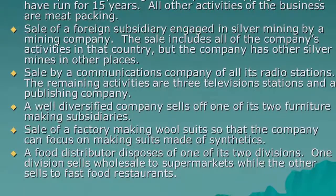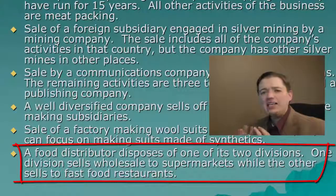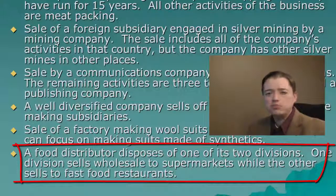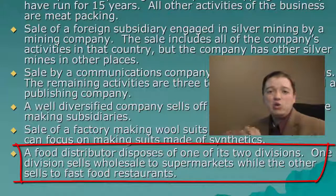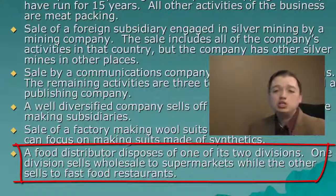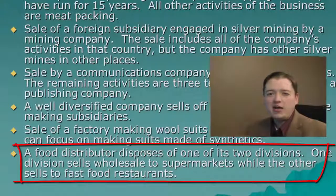Sixth example: a food distributor disposes of one of its two divisions — one that sells wholesale and another that sells to fast food restaurants. The answer is probably no — they're still distributing food, just to a different group. This is the most debatable of all the examples. You could argue the fast food division sells prepared foods that restaurants just reheat, while the other sells raw produce to supermarkets. Maybe that is a discontinued operation because the food preparation equipment wouldn't be used just to sell raw materials. But it would depend on your auditor and how the SEC was feeling at the time.